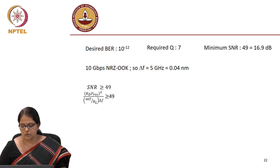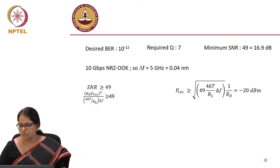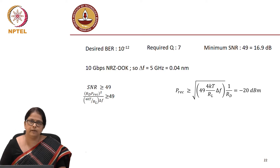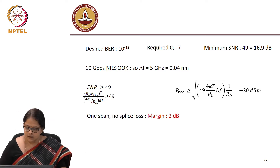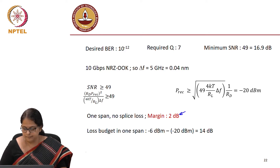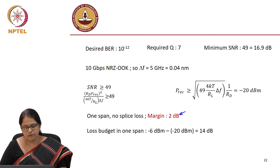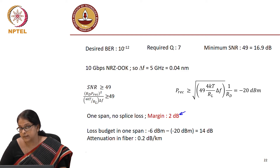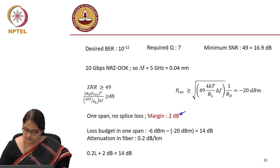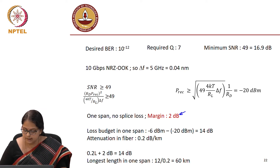For NRZ OOK, the SNR should be greater than 49. Plugging in the values of SNR, the received power must be greater than minus 20 dBm. This is nothing different from what we did last time. For one span with no splice loss but an additional margin of 2 dB, the loss budget allowed is 14 dB. For an attenuation of 0.2 dB per kilometer, not yet considering the DCF, the allowed length is 12 divided by 0.2.